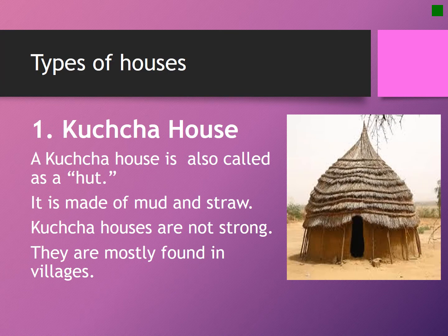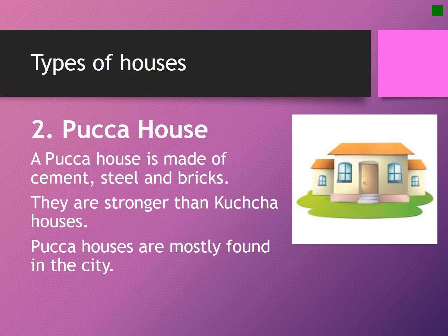A kacha house is also called a hut. It is made of mud and straw. Kacha houses are not strong and are mostly found in villages. A paka house is made of cement, steel and bricks. Paka houses are stronger than kacha houses and are mostly found in the city.